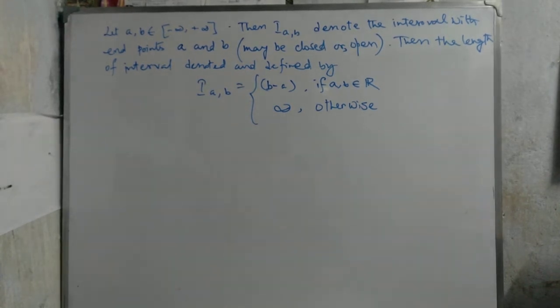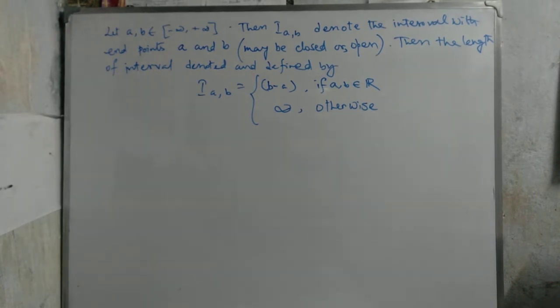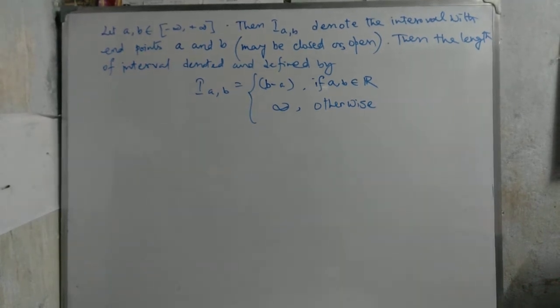If I_AB is of the form where A and B belong to minus infinity to plus infinity, then I_AB denotes the interval with endpoints A and B, which may be closed or open. The length of the interval is denoted and defined by I_AB equal to B minus A if A, B belongs to R, and infinity otherwise.